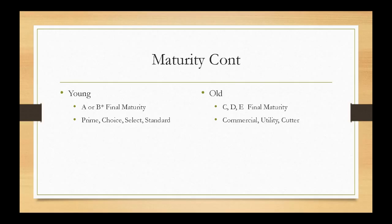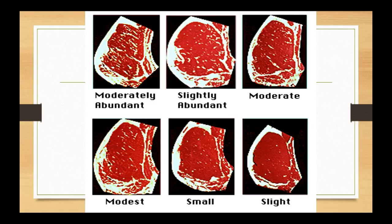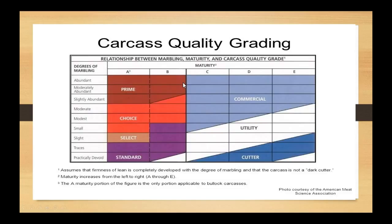Looking at marbling quality grades: starting at the lower end would be select, followed by low choice, which is small marbling. Modest and moderate marbling would be your top choice — that's what certified Angus beef falls into. Slightly abundant and moderately abundant marbling is prime, which is about 2% of all beef graded in the United States today. This image came straight out of the AMSA Meat Science Handbook.